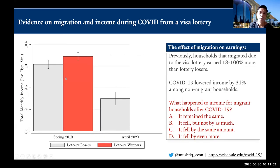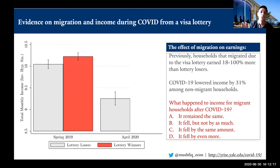In 2013, the Bangladesh government ran a lottery for visas to Malaysia through a government-to-government agreement sending Bangladeshi workers to work in plantations in Malaysia. Since 2013, as we've been tracking these households, people lucky enough to win the lottery and migrate to Malaysia had much higher migration rates. Those families tracked back home in Bangladesh have been doing a lot better. From 2013 to 2019, we observed much higher income — in some years about double, 100% higher.